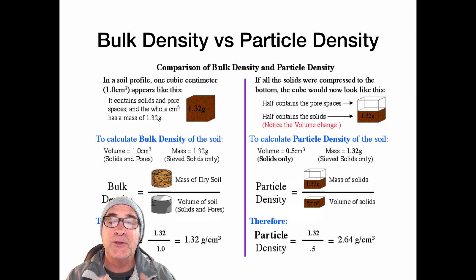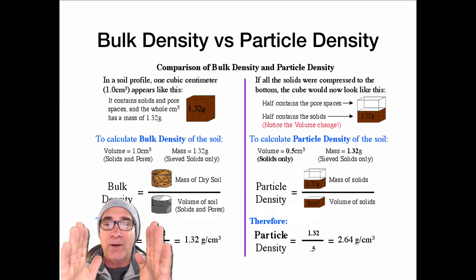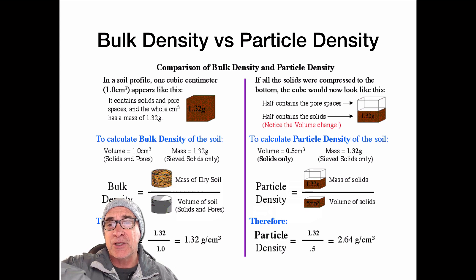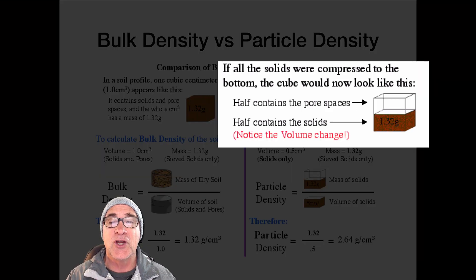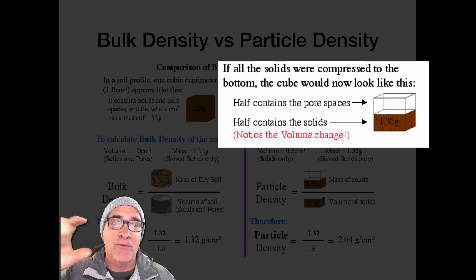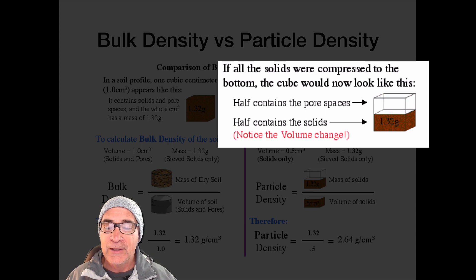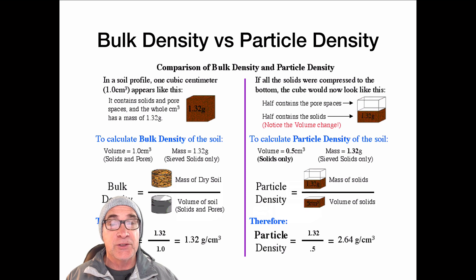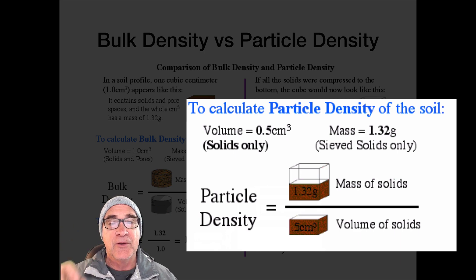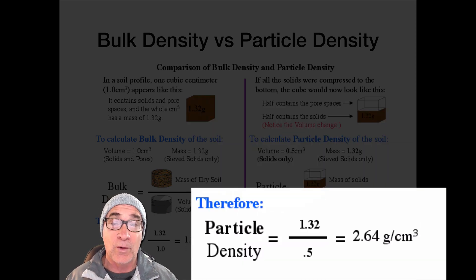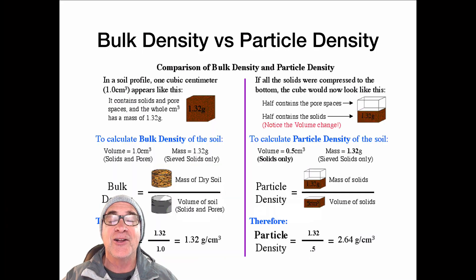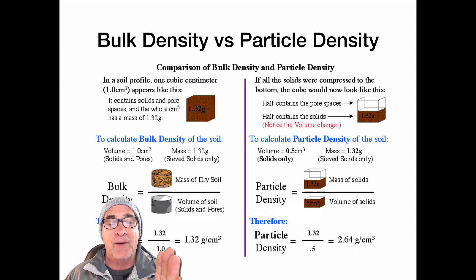Now on the particle density side, we just want to look at the particles, the solid stuff of soil. We take that same one cubic block and take essentially the pores out of it, and what's left behind is the solids. And that solids is only about half that cube. So we take the mass of the solids, which is 1.32, just as we did in the bulk density. But because the volume only takes up half, you divide 0.5 into 1.32, you get a particle density of 2.64 or 2.65, whatever your preference is. That's a constant. That's the thing that really doesn't change much because we've already taken all the pores out. So now that you have a little bit of understanding about bulk density and particle density.